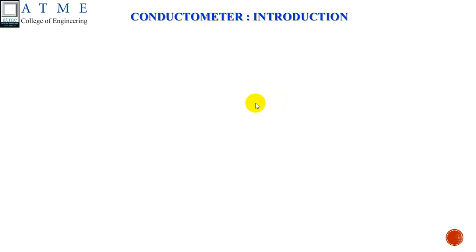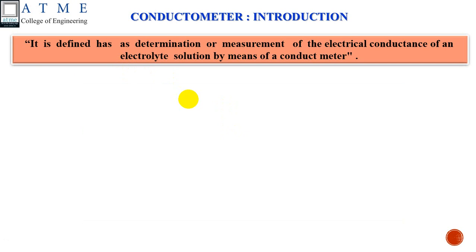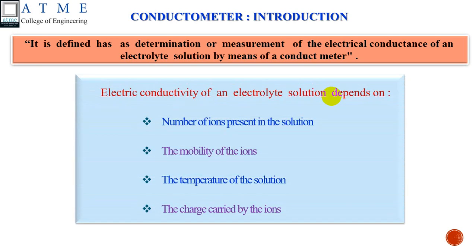Let us see the introduction first. Conductometry is generally defined as the determination or measurement of electrical conductance of an electrolyte solution by means of a conductometer. The conductometer is an instrument used to measure the conductance of a given electrolyte solution. The conductivity of an electrolyte solution mainly depends upon the number of ions present, mobility of ions, temperature of the solution, and the charge carried by the ions.